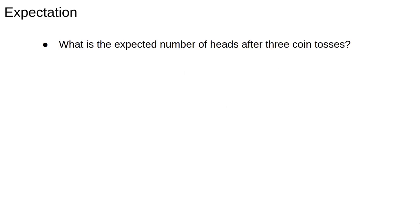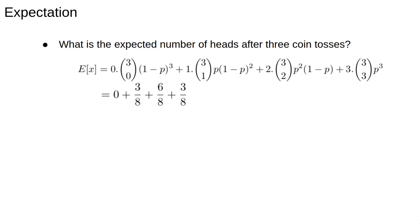As an example let's calculate the expected number of heads after three coin tosses. First we just plug in the binomial distribution into the definition of expectation. Then we use p equals one half and calculate all the coefficients. Add everything up and we get three over two which seems reasonable. In three coin tosses we expect one and a half heads.